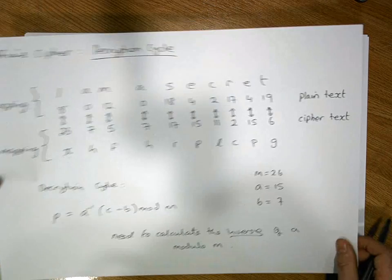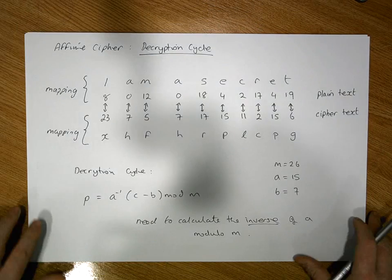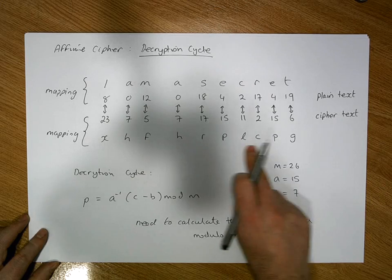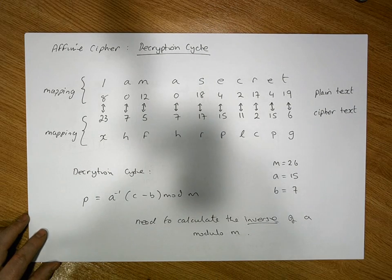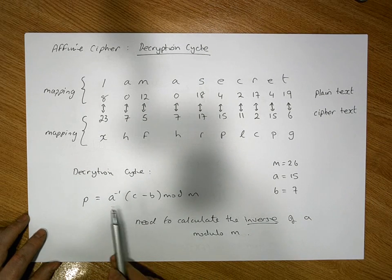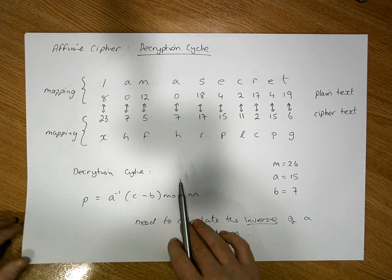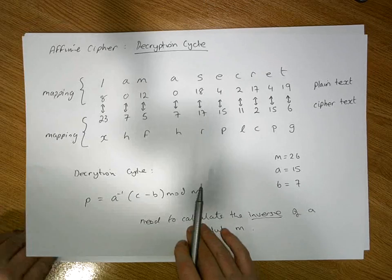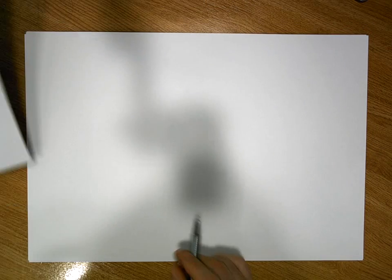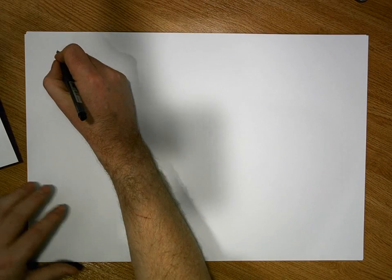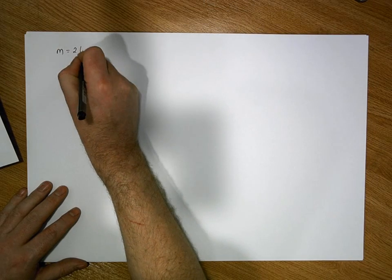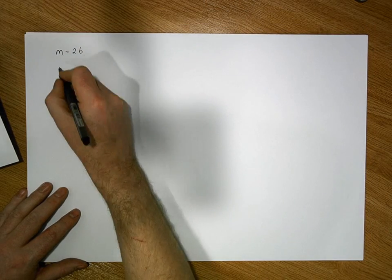So when it comes to the decryption cycle, and when I want to decrypt this particular sequence of text, I now know that a-inverse must be equal to 7. Let me write those values down again: m is equal to 26, the size of our alphabet.